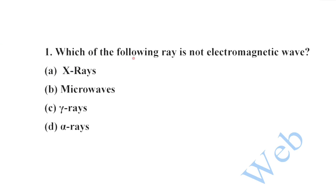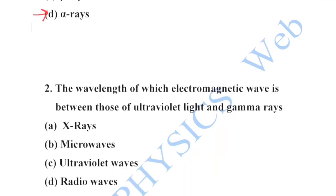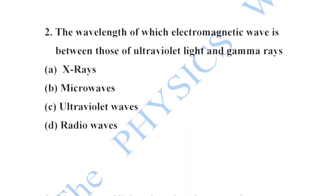Question number one: which of the following ray is not an electromagnetic wave? X-rays, microwaves, and gamma rays are electromagnetic waves, but alpha rays are not electromagnetic waves. So the correct option is option B.